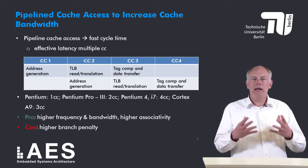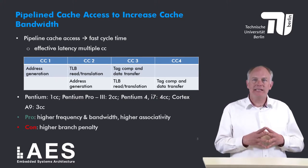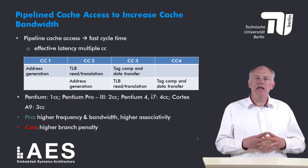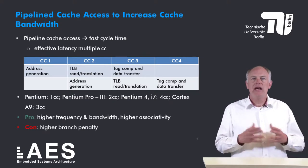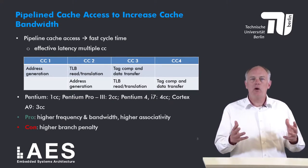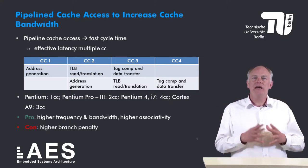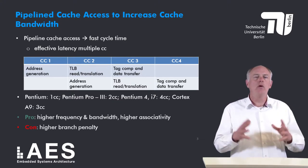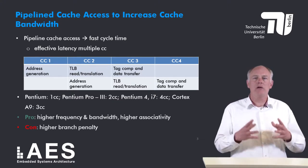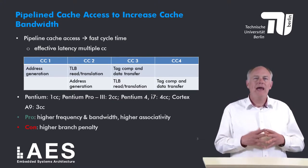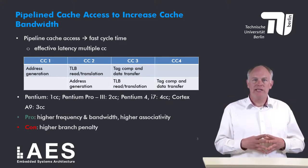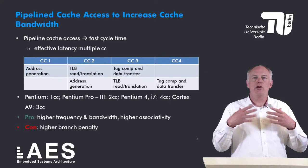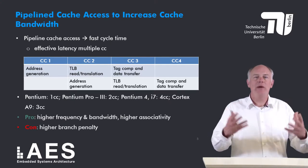The advantage of pipelined cache access is that a higher frequency and a higher cache bandwidth can be achieved. It also allows higher associativity since the cache access is no longer on the critical path of the processor. A disadvantage is however that the branch penalty increases, so cache accesses should not take too many cycles.